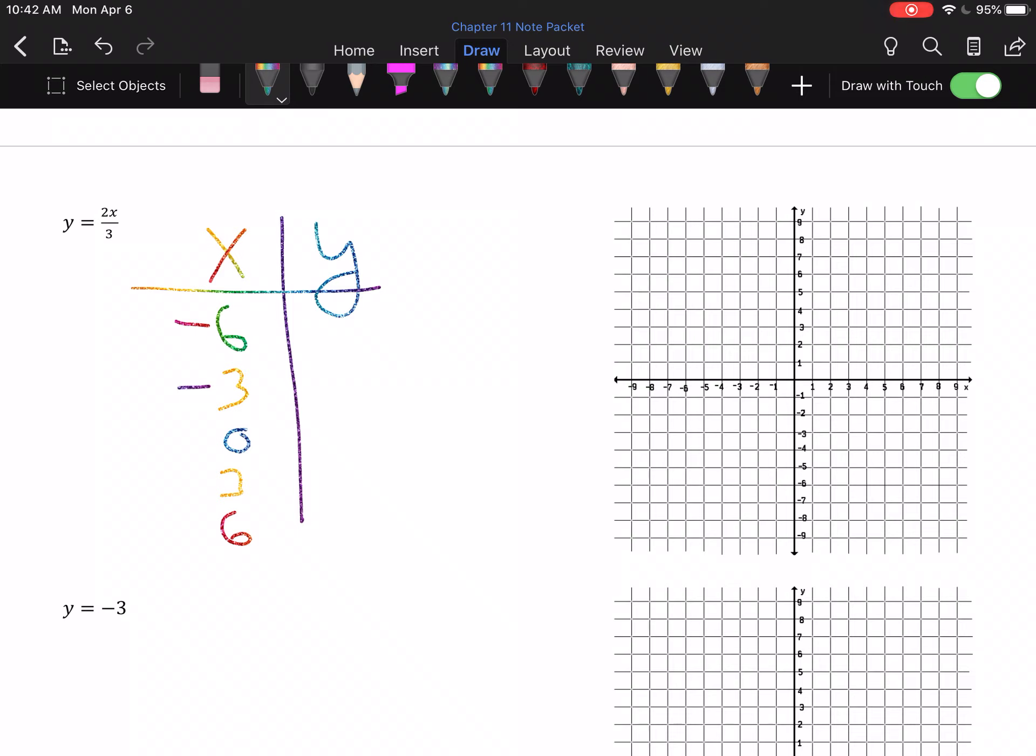So, here, we're going to multiply and then divide. 2 times negative 6 is negative 12, divided by 3 is negative 4. 2 times negative 3 is negative 6, divided by 3 is negative 2. 2 times 0 is 0, 0 divided by 3 is 0. 2 times 3 is 6, 6 divided by 3 is 2. And 2 times 6 is 12, 12 divided by 3 is 4.